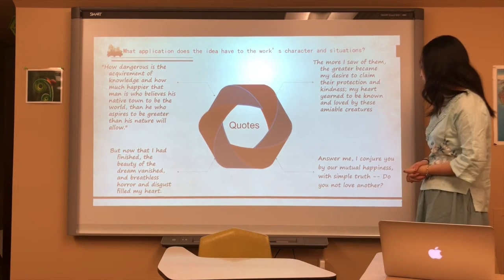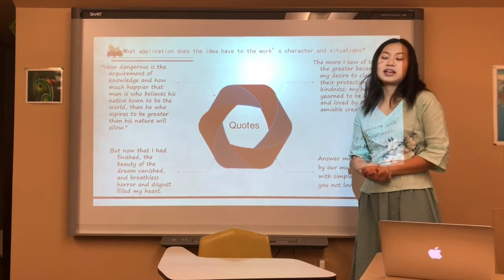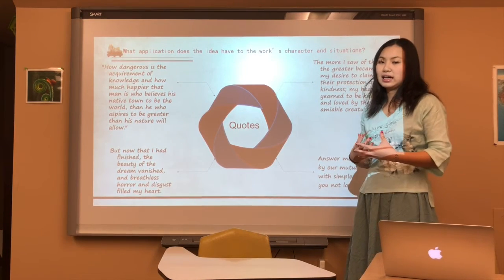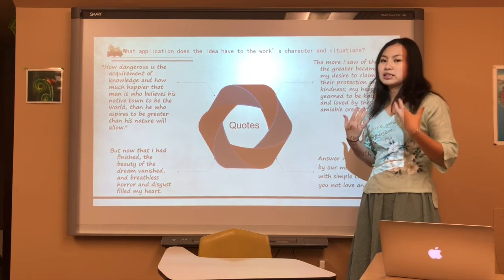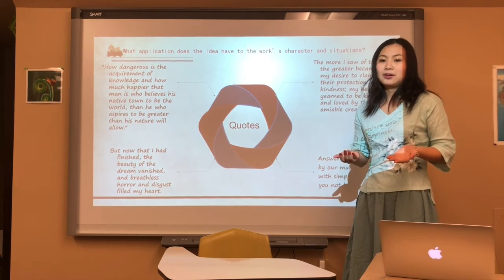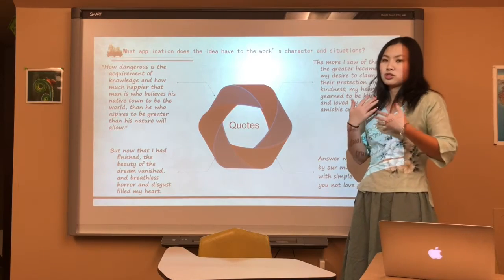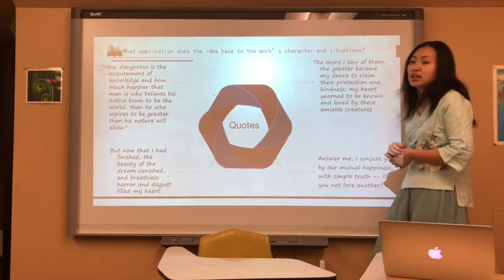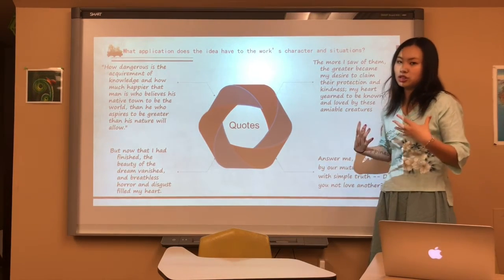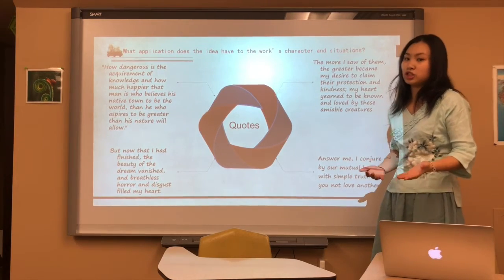The final quote: 'Answer me, I conjure you by our mutual happiness with simple truth. Do you not love another?' This comes from Elizabeth's letter to Victor. Because Victor was so obsessed with creating a monster for years, he didn't care about his family, left Elizabeth, neglected his friends and his health. Elizabeth is essentially asking: do you really love anyone else, Victor, or are you just selfish — the only person you love is yourself? Because Victor doesn't love anybody else, it contributes to his downfall. In our human nature, the way of nature is that we need to love other people and be loved in return. Victor tried to go against that nature, and it led to his downfall.